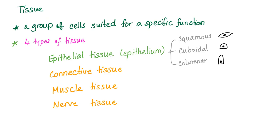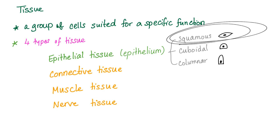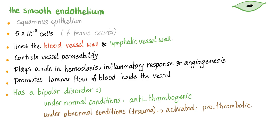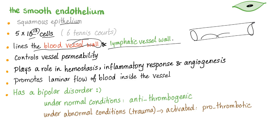Let's talk about the endothelium. Groups of cells are called tissue — we have four types: epithelial, connective, muscle, and nerve tissue. Epithelial tissue has three types depending on cell shape: squamous, cuboidal, and columnar. The smooth endothelium is squamous epithelium — 5 × 10¹³ cells, equivalent to about 6 tennis courts in area. It lines blood vessel walls from the inside, as well as lymphatic vessel walls.